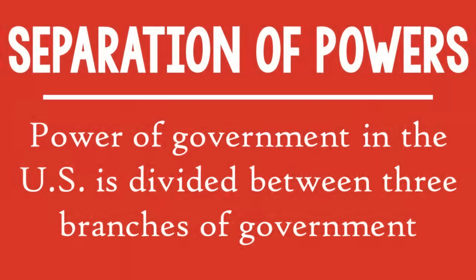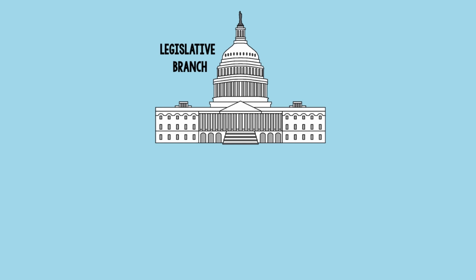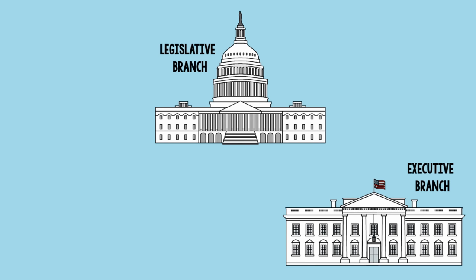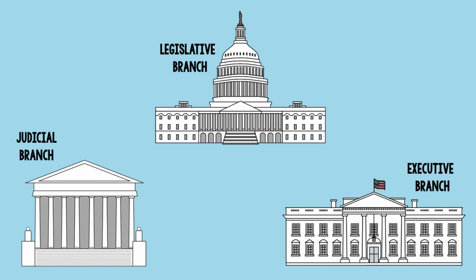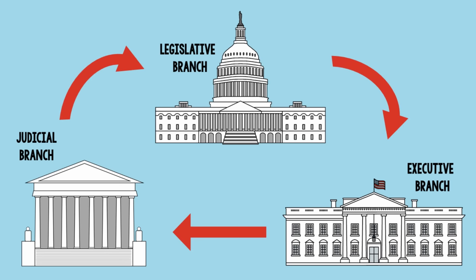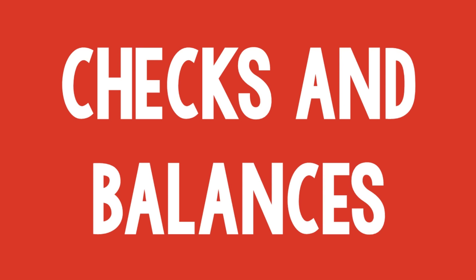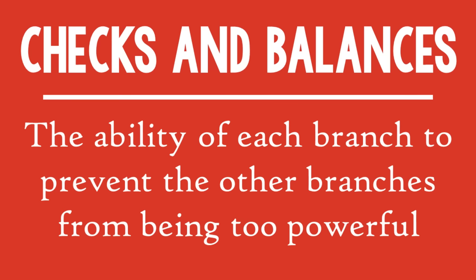Power of government in the United States is divided between three branches: the legislative branch, which makes the laws; the executive branch, which carries out the laws; and the judicial branch, which interprets the laws. Each branch of government has specific responsibilities and the ability to check the powers of the other branches. This system of checks and balances — another principle of the Constitution — ensures that one branch can't become too powerful.